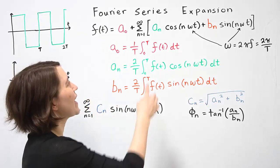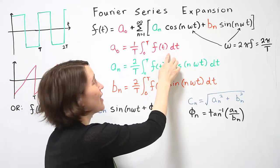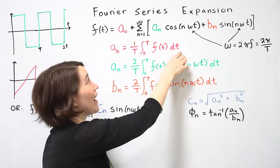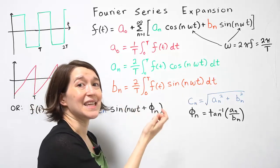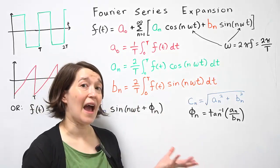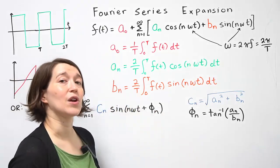You'll notice we're taking the function f, we're integrating it over the period, and then we're dividing by T. This is the same as the average, so this term is simply the average of the waveform.